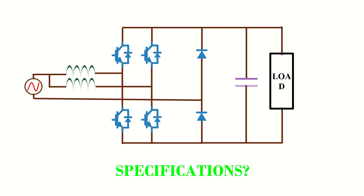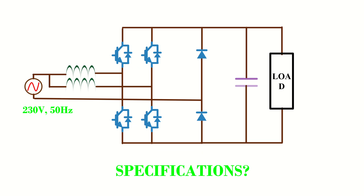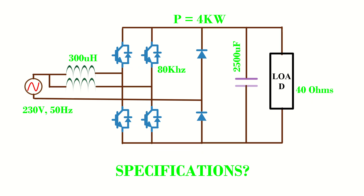The specifications for the circuit used in the simulation are as follows: the input voltage is 230V at 50Hz, the inductor value is 300μH, the output capacitor value is 2500μF, the switching frequency is 80kHz, and the rated power is 4kW, so the load resistance used is 40Ω.